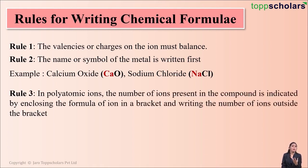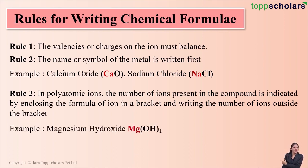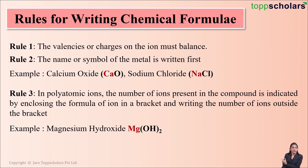If a compound contains polyatomic ions, rule number 3 says that the number of ions present in the compound should be indicated by enclosing the formula of the ion in a bracket, with the number of ions written outside the bracket. For example, magnesium hydroxide has the formula Mg(OH)2. Here OH is the polyatomic ion, and two polyatomic ions are present in this compound. So we put OH in brackets and write the number 2 outside the bracket.